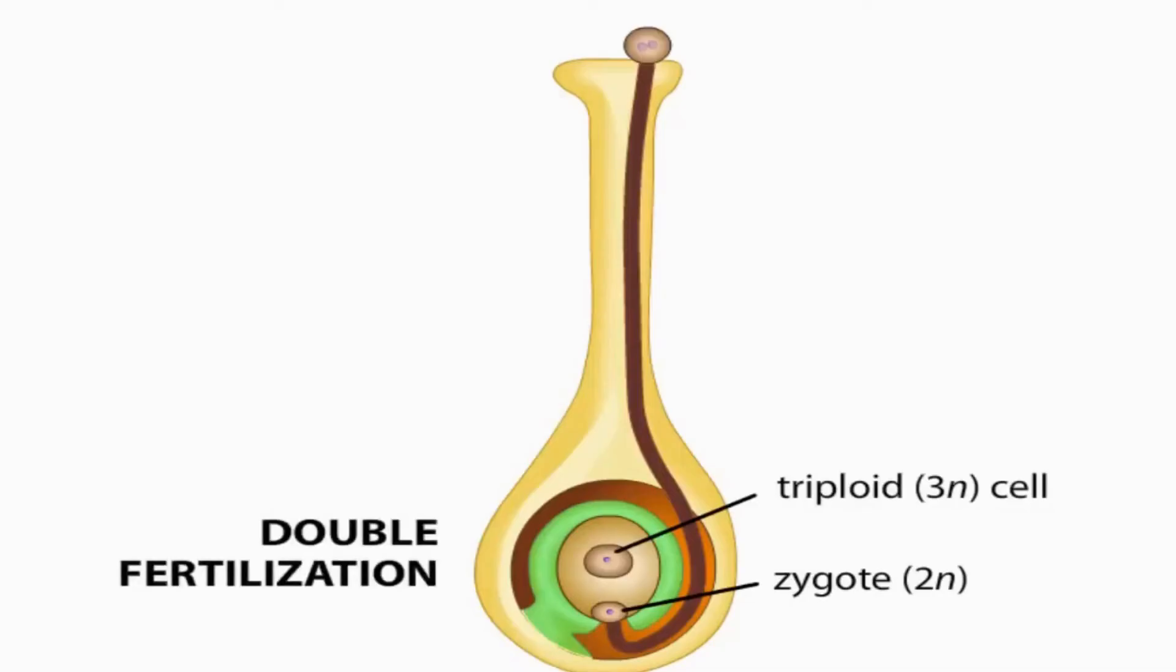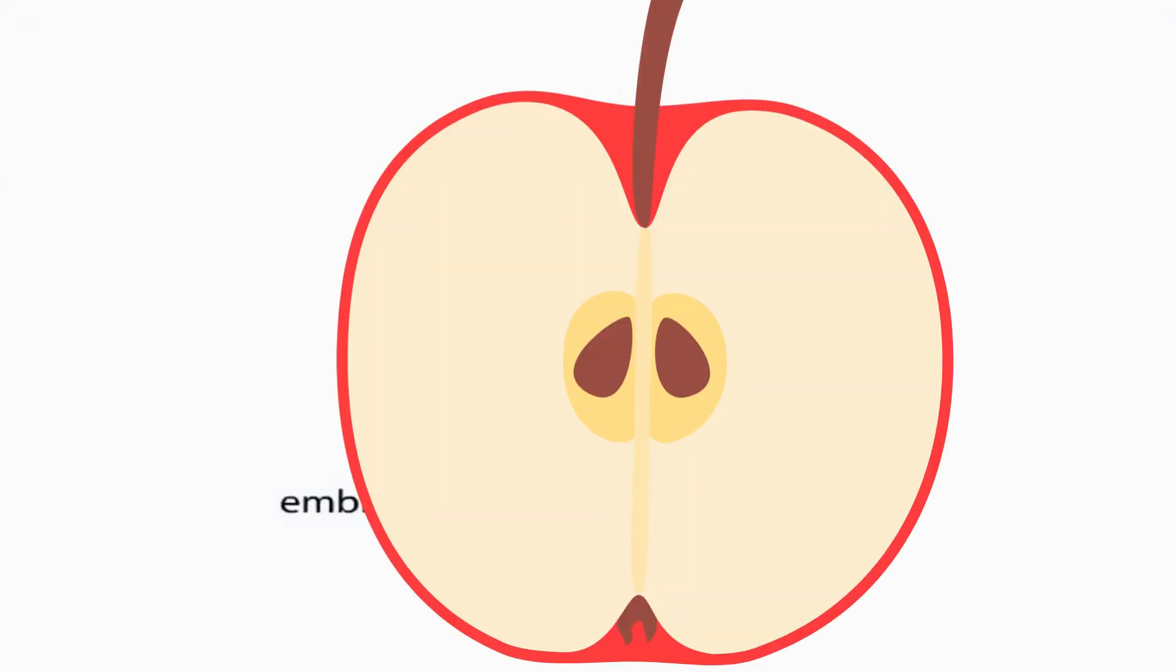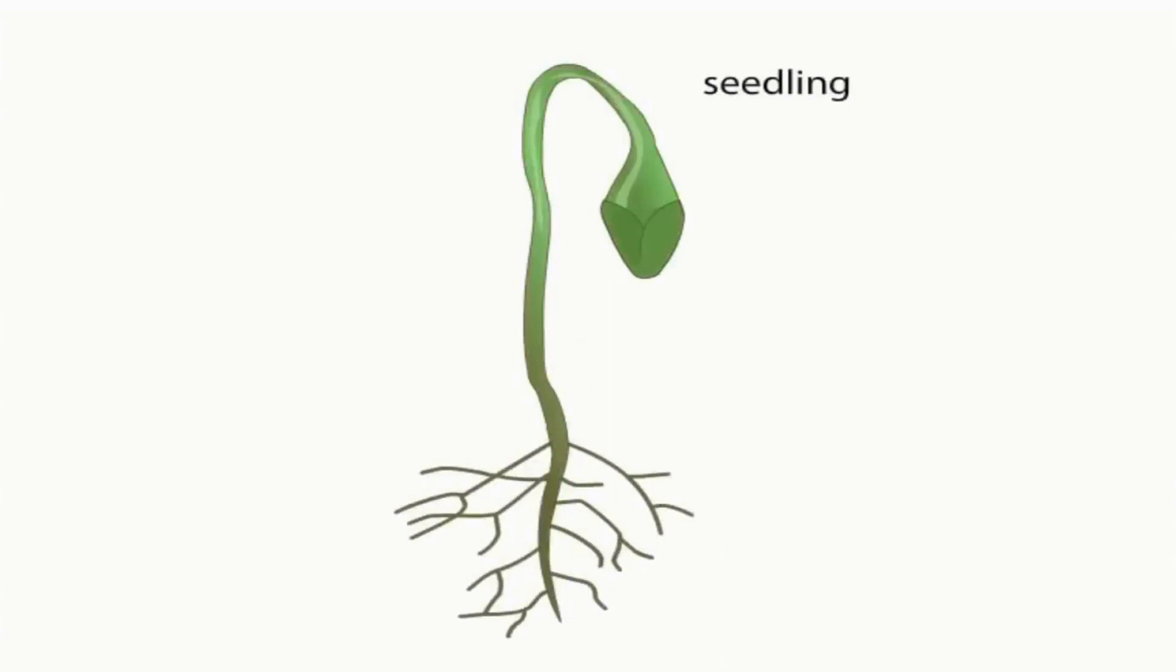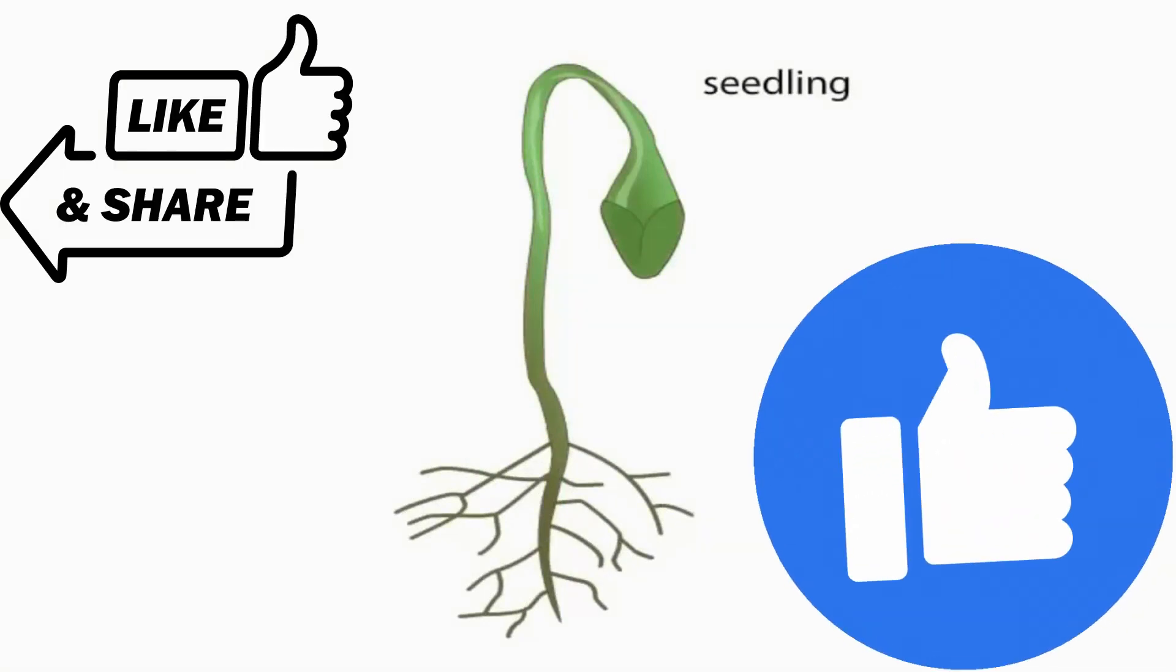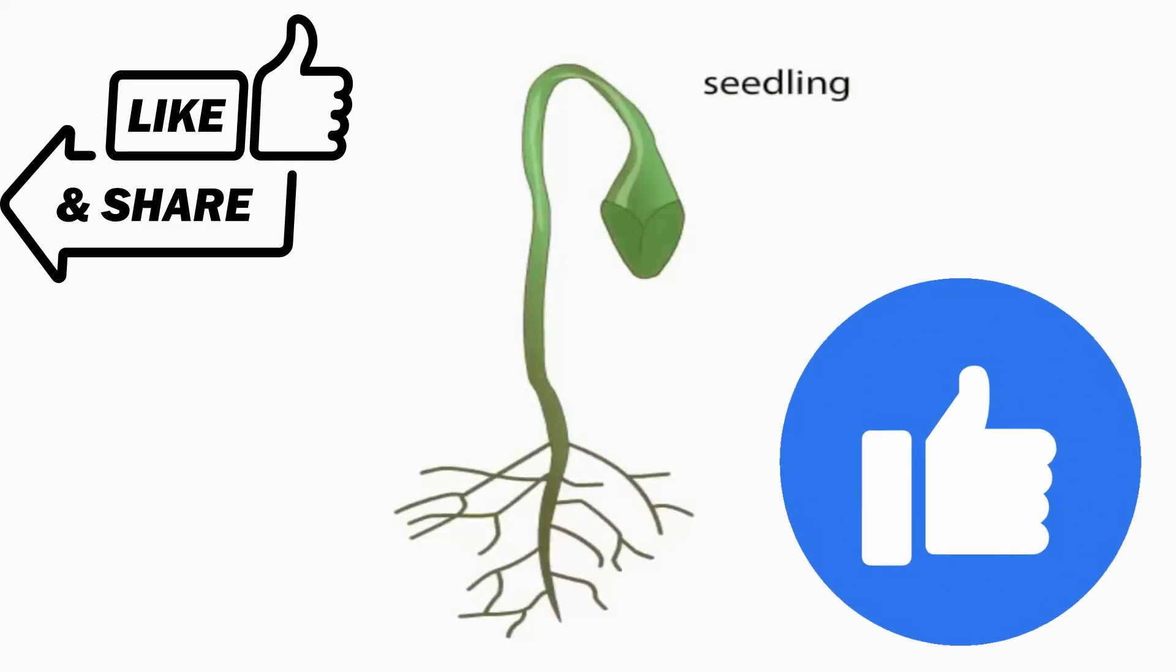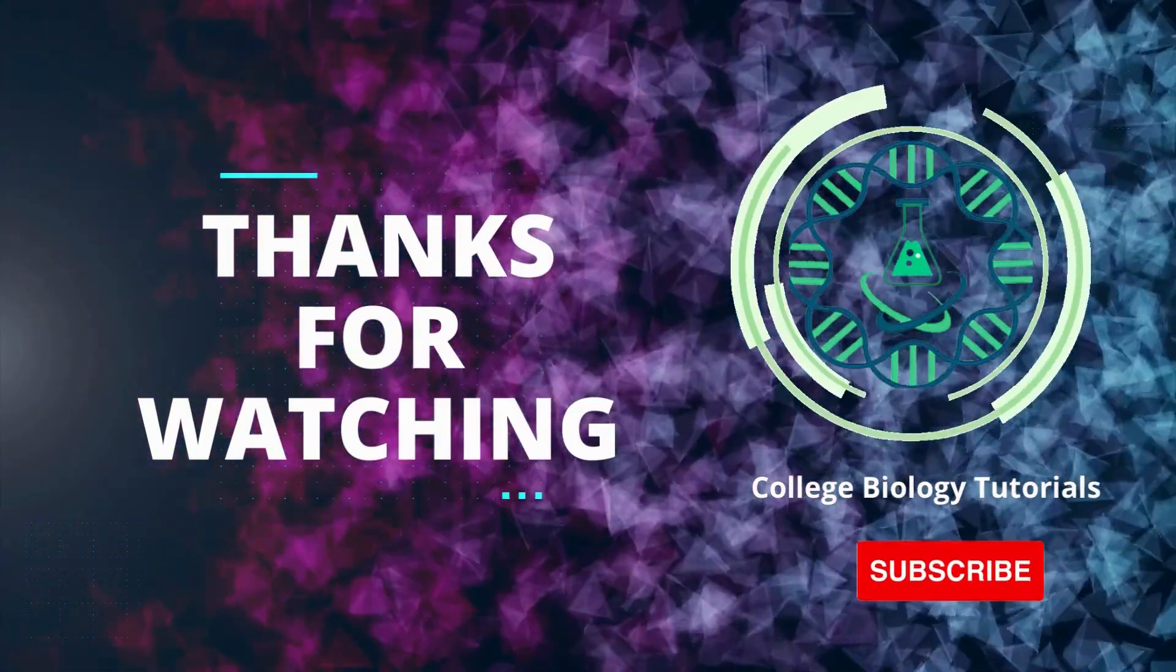The zygote develops into seeds and the ovary enlarges and becomes a fruit surrounding the internal seeds. Seeds germinate and life begins. Please like and share our videos with your friends if you have any questions.